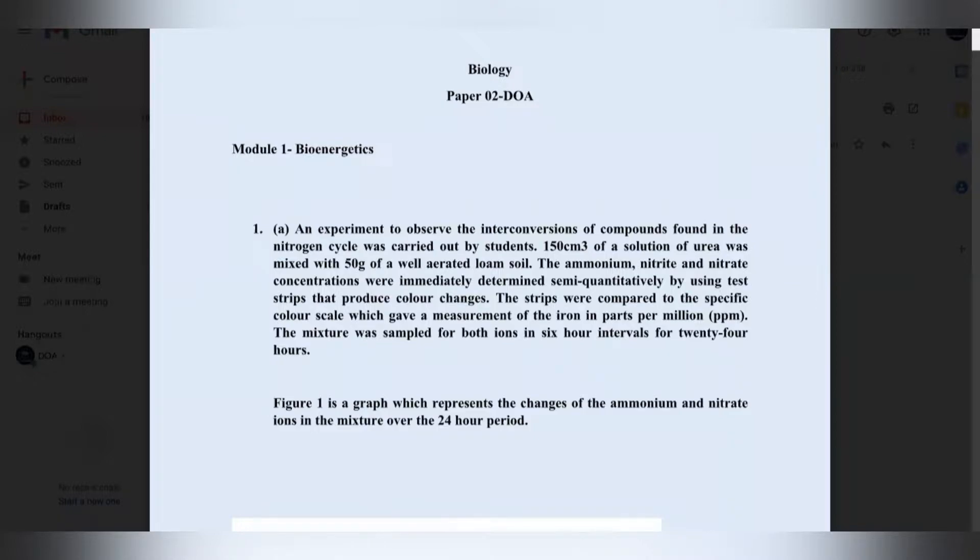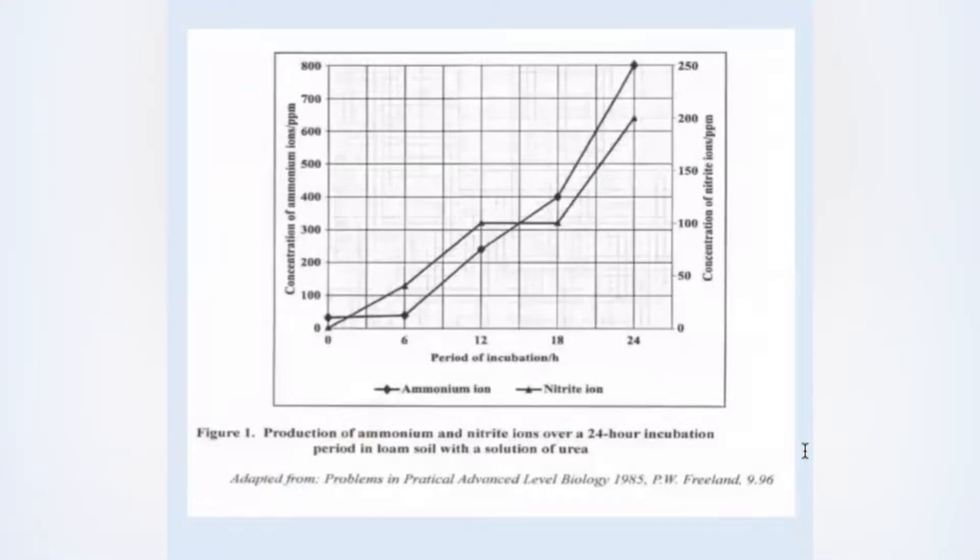Question 1A reads: An experiment observed the interconversions of compounds found in the nitrogen cycle was carried out by students. 150 centimeters cube of a solution of urea was mixed with 50 grams of a well-aerated loam soil. The ammonium, nitrite, and nitrate concentrations were immediately determined semi-quantitatively by using test strips that produce color changes. The strips were compared to the specific color scale, which gave a measurement of the ion in parts per million. The mixture was sampled for both ions in 6-hour intervals for 24 hours. Figure 1 is a graph which represents the changes of the ammonium and nitrate ions in the mixture over the 24-hour period.